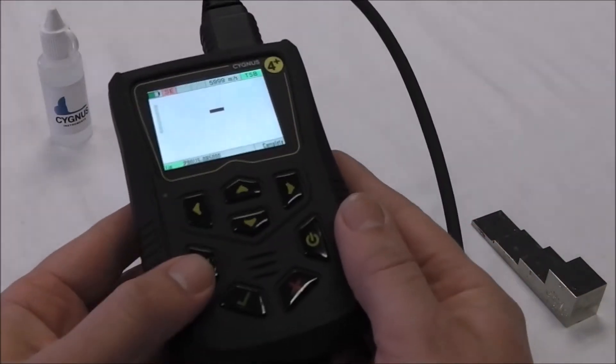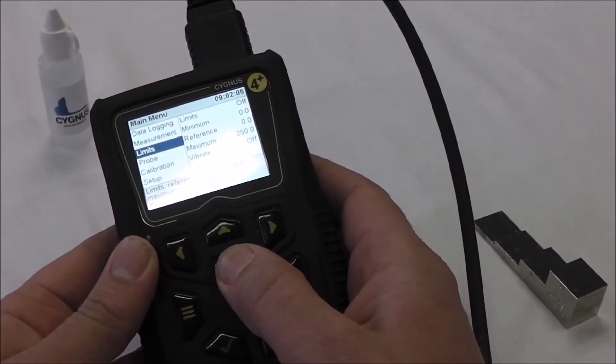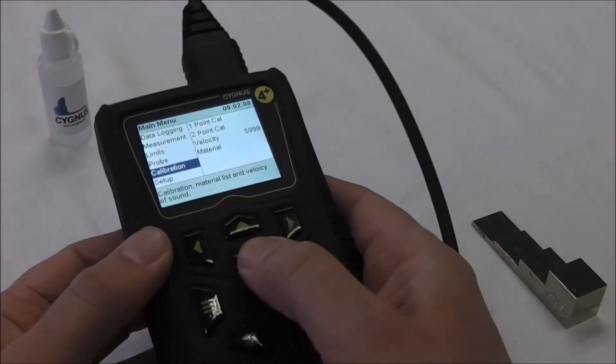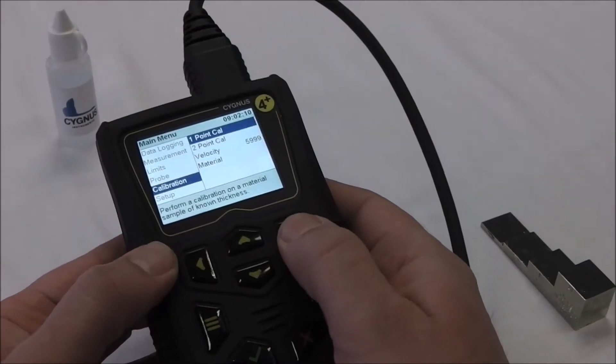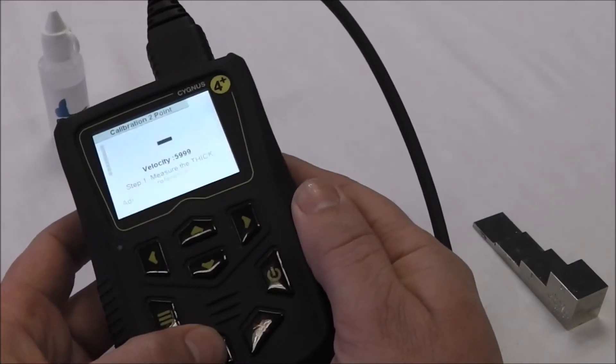Press the menu button for the menu, the down arrow to highlight calibration, the right arrow to access the right-hand menu, down to highlight two-point cal and the green tick to select.